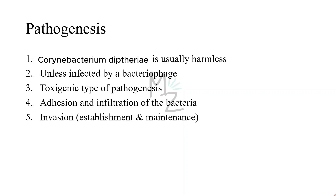Pathogenesis. Corynebacterium diphtheriae is usually harmless unless it is infected by a bacteriophage. The pathogenesis involves the toxigenic type, meaning the toxin is released. When bacteria enter the human body, there will be adhesion and infiltration. Although exotoxin production is essential for pathogenesis, invasion is also necessary because the organism must first establish itself in the throat — the primary location of diphtheria.